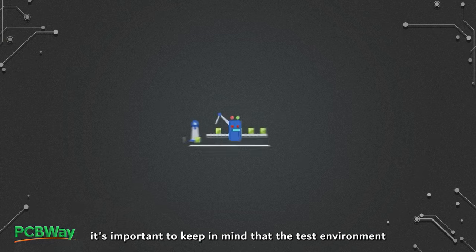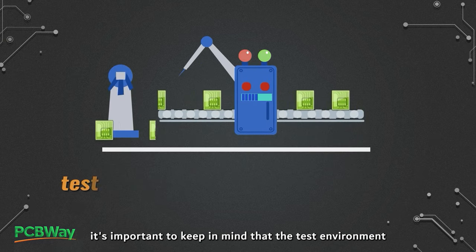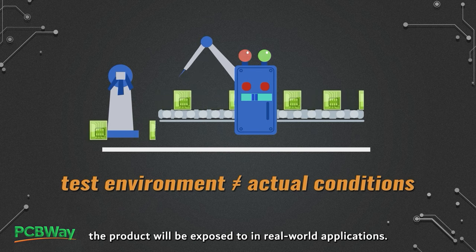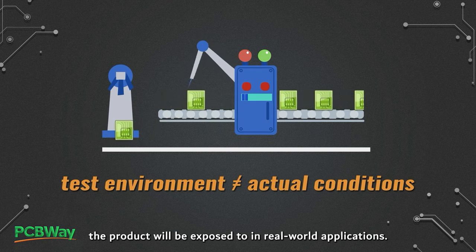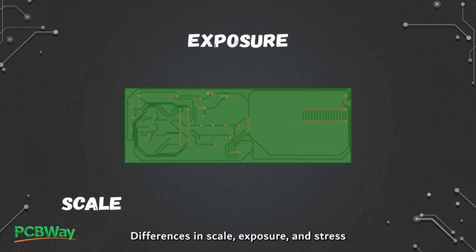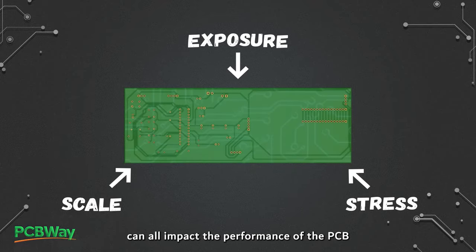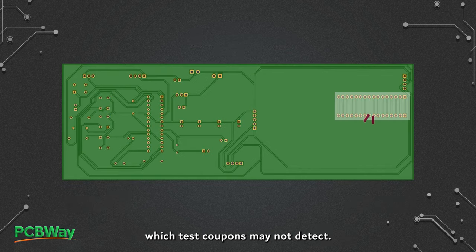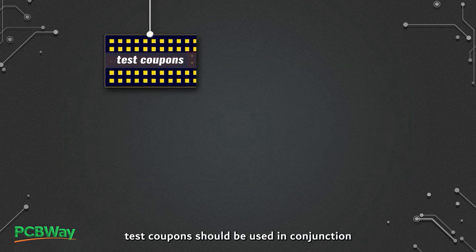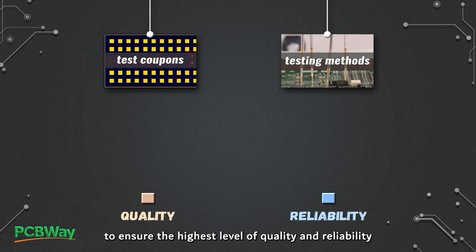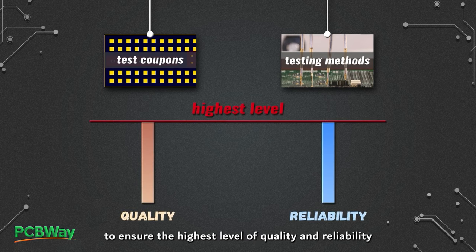However, it's important to keep in mind that the test environment may not accurately reflect the actual conditions that the product will be exposed to in real-world applications. Differences in scale, exposure, and stress can all impact the performance of the PCB in real-world conditions, which test coupons may not detect. Therefore, test coupons should be used in conjunction with other testing methods to ensure the highest level of quality and reliability in PCB design.